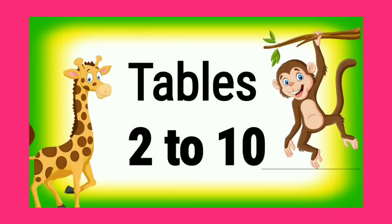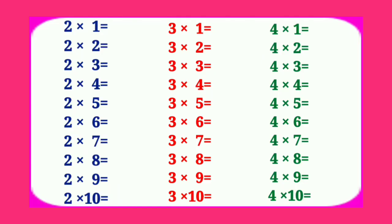Table of 2. 2 1's are 2, 2 2's are 4, 2 3's are 6, 2 4's are 8, 2 5's are 10, 2 6's are 12, 2 7's are 14, 2 8's are 16.